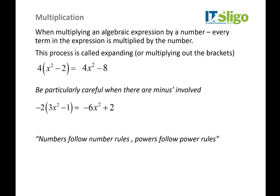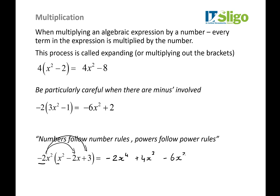Even when things get complicated, numbers follow number rules and powers follow power rules. So we have minus two times one giving minus two, x squared times x squared giving x to the power of four. Then minus two times minus two gives plus four, and x squared times x gives x to the power of three. Minus two times three gives minus six, and we still have the x squared. Be particularly careful when there are minuses and powers involved — there's quite a lot going on and it's easy to make a simple slip.